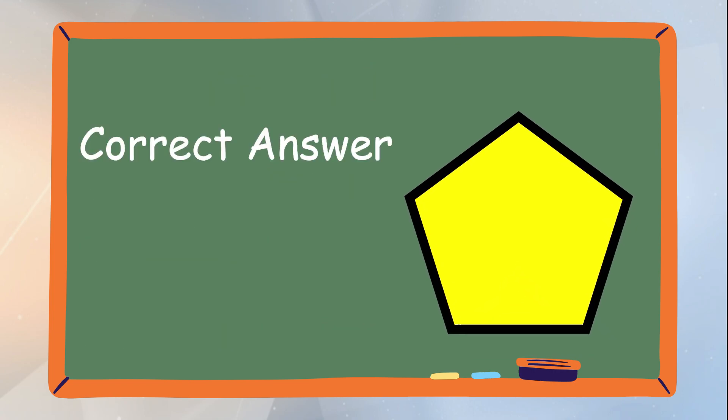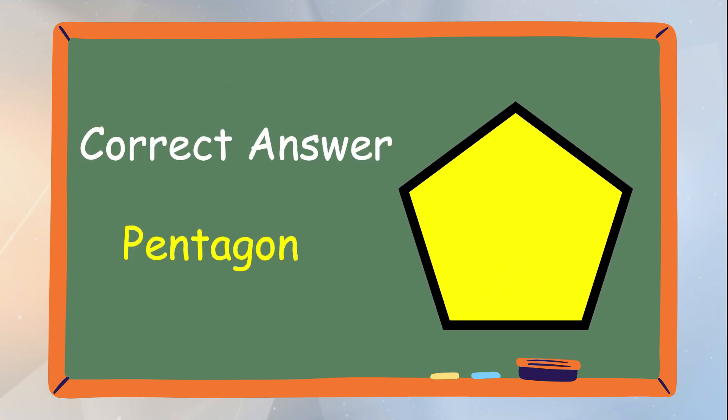Very good! The correct answer is pentagon. The given polygon is a pentagon. A pentagon has 5 sides and 5 vertices.